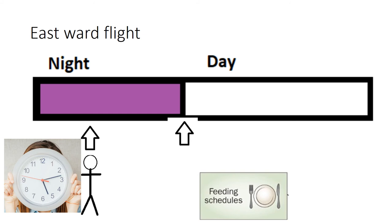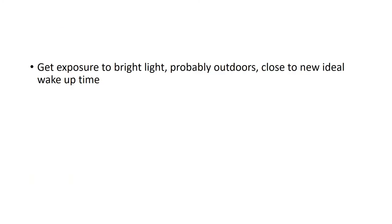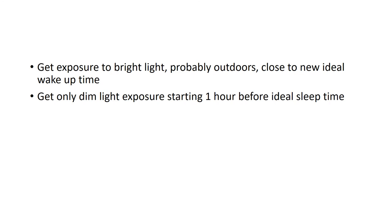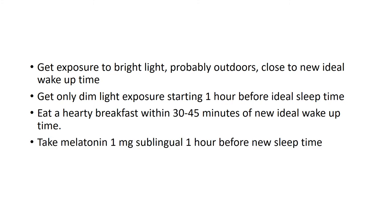To mitigate the effects of eastward jet lag, get exposure to bright light early in the morning and eat a hearty breakfast within 30 to 45 minutes of the ideal wake-up time. Factors that minimize eastward jet lag: get bright light exposure, preferably outdoors, close to the new ideal wake-up time. Get only dim light starting one hour before ideal sleep time. Eat a hearty breakfast within 30 to 45 minutes of the new ideal wake-up time, and take melatonin one milligram sublingually one hour before the new sleep time.